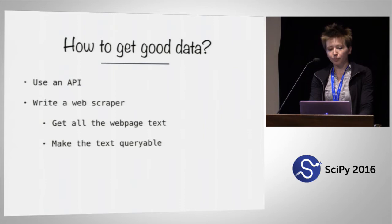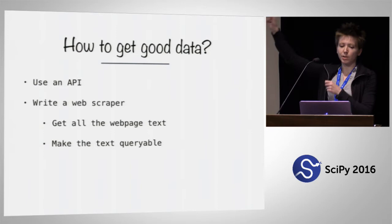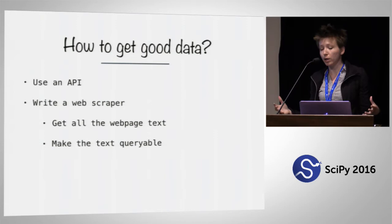There are two main steps to web scraping. First, we make an HTTP request to the server, get all of the web page HTML, and pull it down to our computer so we can work locally. Then we make that text queryable so we can actually do something with it.